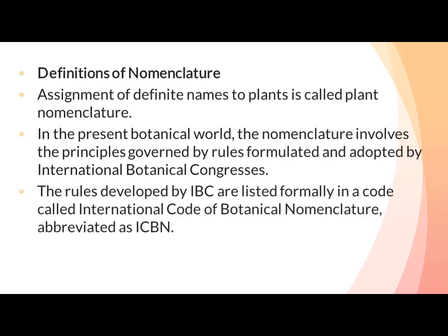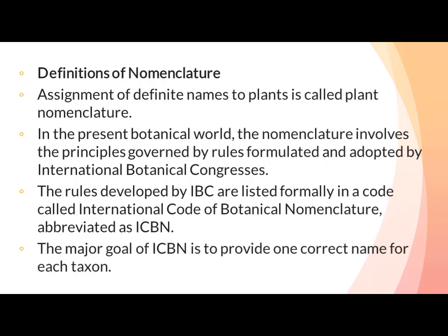In the present botanical world, the nomenclature involves the principles governed by rules formulated and adopted by international botanical congresses. The rules developed by IBC are listed formally in a code called International Code of Botanical Nomenclature (ICBN). The major goal of ICBN is to provide one correct name for each taxon.